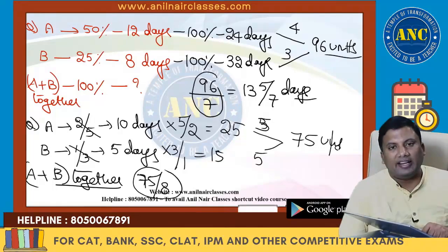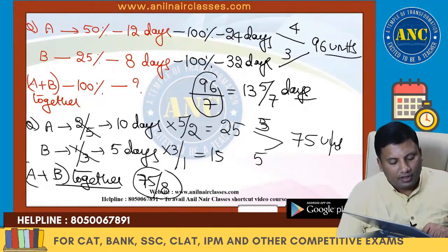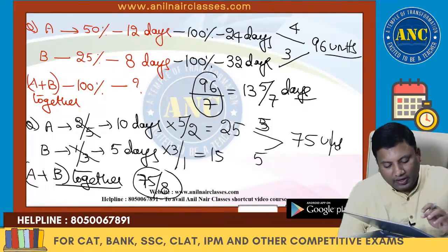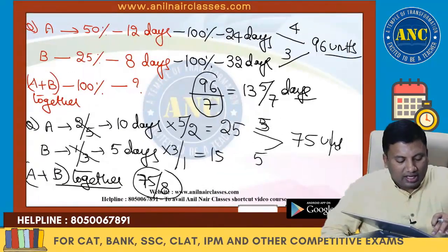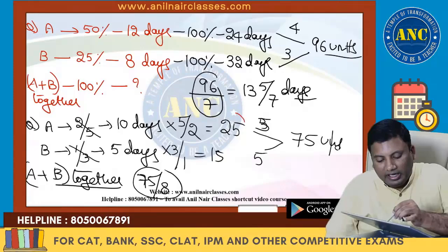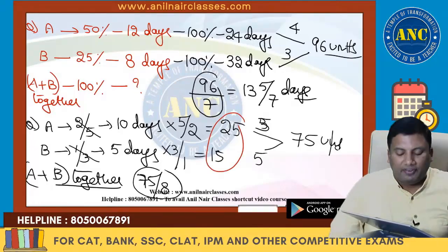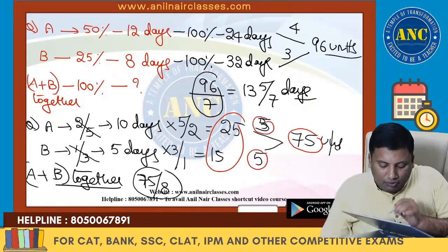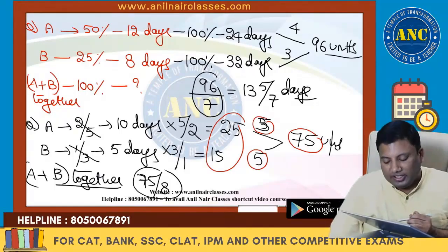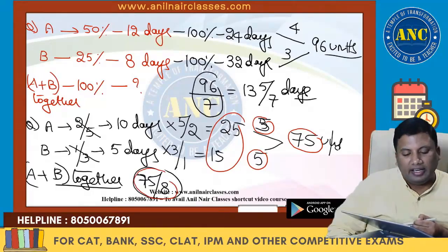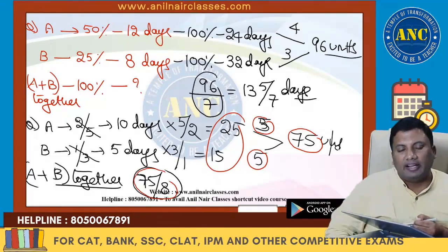I hope the idea is clear. To recap: 10 × (5/2) = 25 days for A; 5 × (3/1) = 15 days for B. LCM of 15 and 25 is 75. A contributes 3 units/day, B contributes 5 units — total 8 units per day. So combined = 75/8 days.